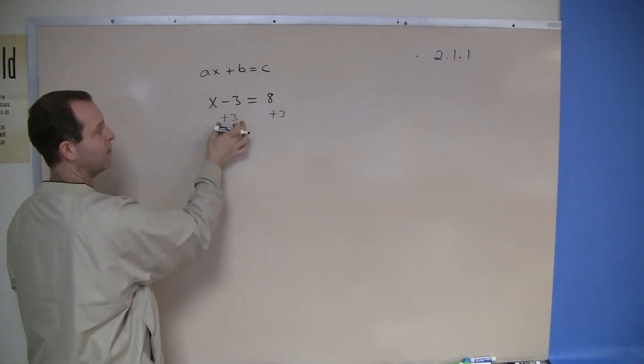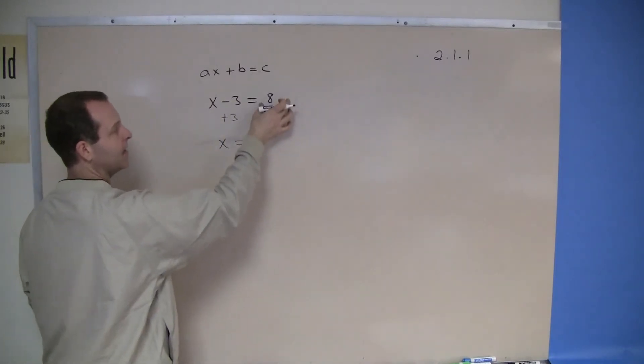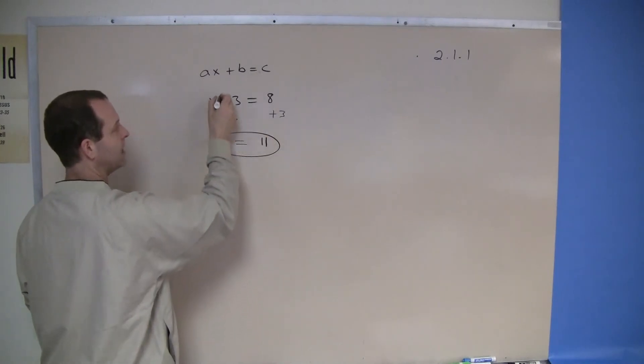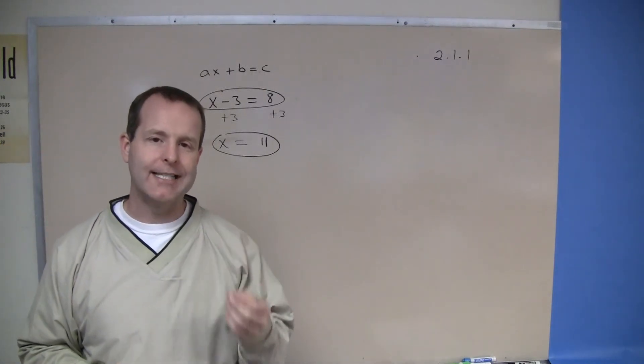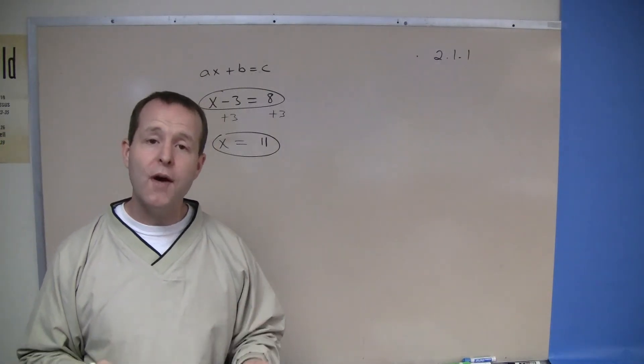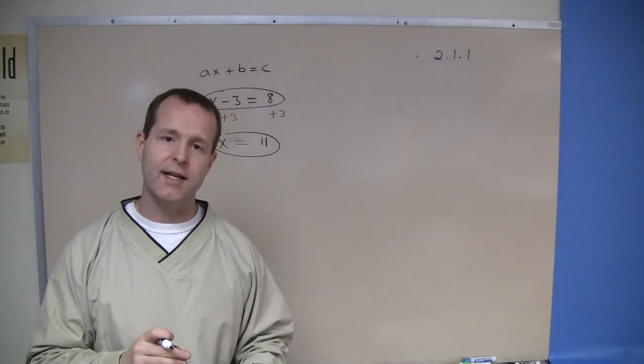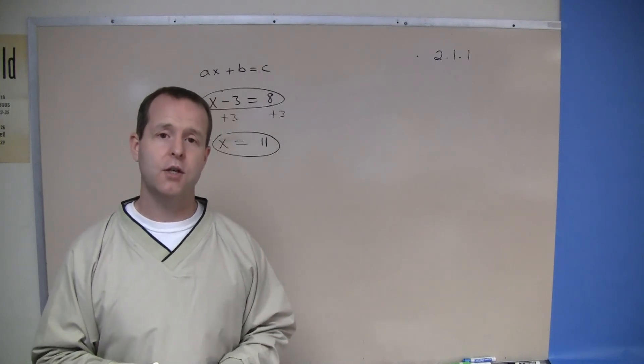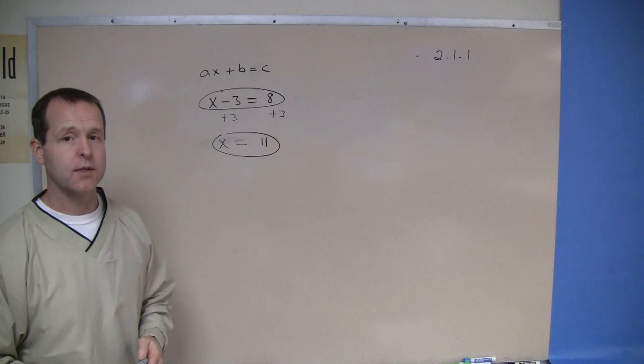X minus 3 plus this 3, negative 3 plus positive 3 gives me 0. So X equals, and then 8 plus this 3 is 11. X equals 11 and X minus 3 equals 8 - they're not identical, they're equivalent equations. However, one of them is written as X by itself, which allows us to know what X is. In this particular case, X equals 11.